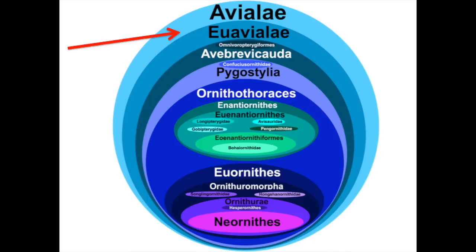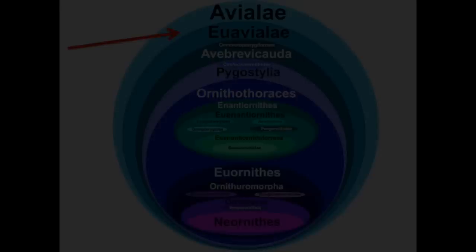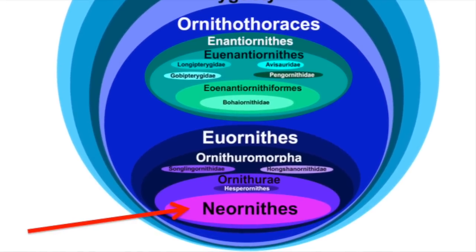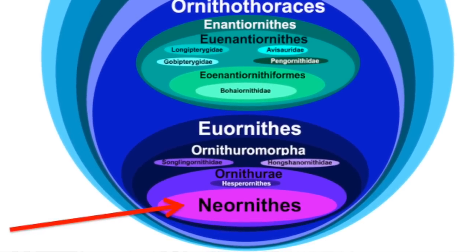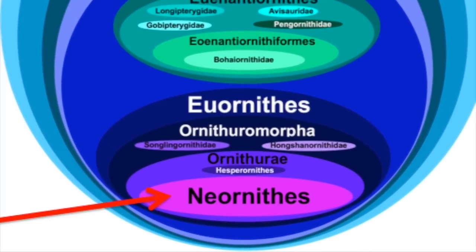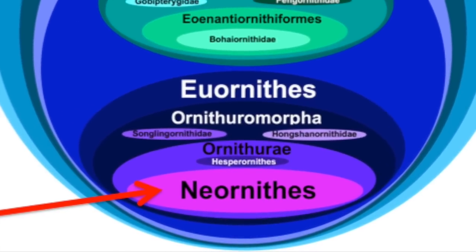What is the smallest possible group that we could use as birds? What is definitely all birds — no doubt — nothing in that group could possibly not be a bird? We're talking the most conservative group. Well, it's this one: Neornithes. That is the group that contains modern birds, all of them, and their most recent common ancestor. Note that it doesn't include Archaeopteryx.